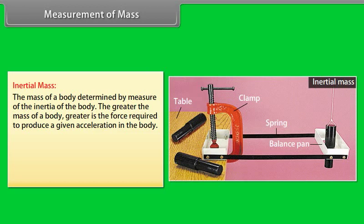Inertial mass. The mass of the body is determined by measure of the inertia of the body. The greater the mass of a body, greater is the force required to produce a given acceleration in the body. F is equal to MA, or M is equal to F upon A.